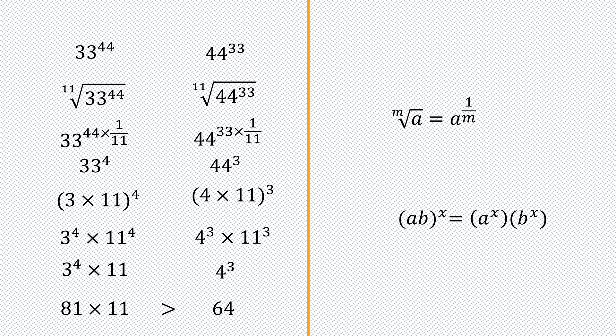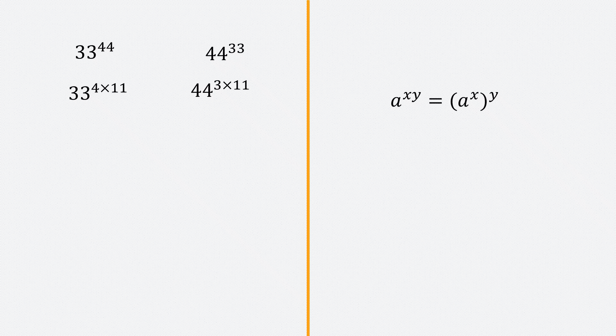So 33 to the power 44 is larger. Now let's look at an alternative solution. We have 33 to the power 44 and 44 to the power 33. This time I'll write 44 as 4 times 11, giving 33 to the power 4 times 11, and 33 as 3 times 11, giving 44 to the power 3 times 11. We can use the rule: a to the power x times y equals a to the power x, all to the power y. Applying that rule, 33 to the power 4 times 11 becomes 33 to the power 4, all to the power 11, and 44 to the power 3 times 11 becomes 44 to the power 3, all to the power 11.